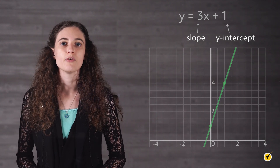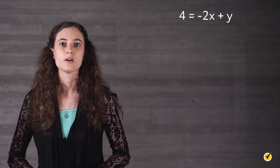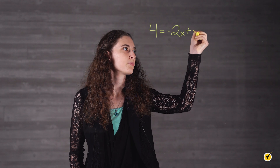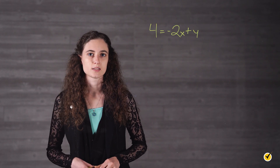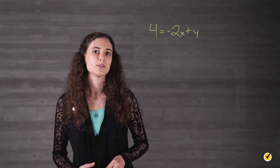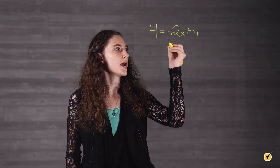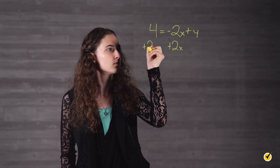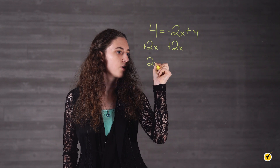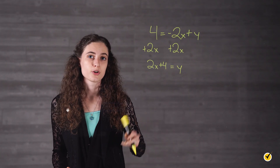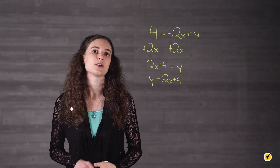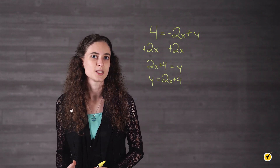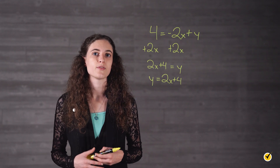For example, if you are solving for y in the equation 4 equals negative 2x plus y, the process would look like this. In order to isolate the variable y, we need to get rid of the term negative 2x. The inverse of negative 2x is positive 2x, so we add 2x to both sides and get 2x plus 4 equals y. If we reverse our equation, we get y equals 2x plus 4. Now the linear equation is in slope-intercept form, y equals mx plus b, and it is now graphable because we have isolated the variable y.